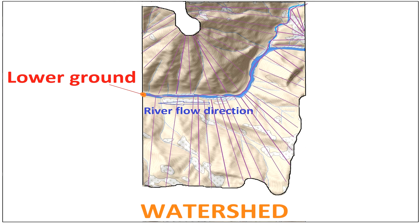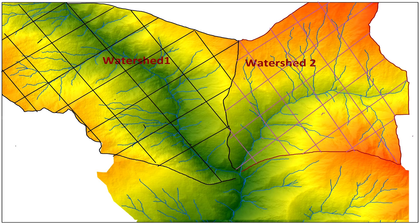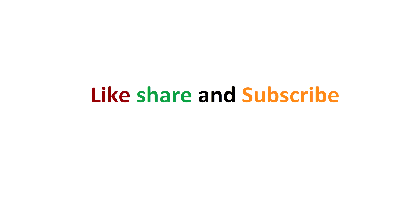If you want to create a watershed area for a certain spatial area, you need topographic data such as contours or a DEM — digital elevation model. You can follow the link below and learn to generate a watershed area by yourself with step-by-step instructions in QGIS. Thank you. Happy learning.